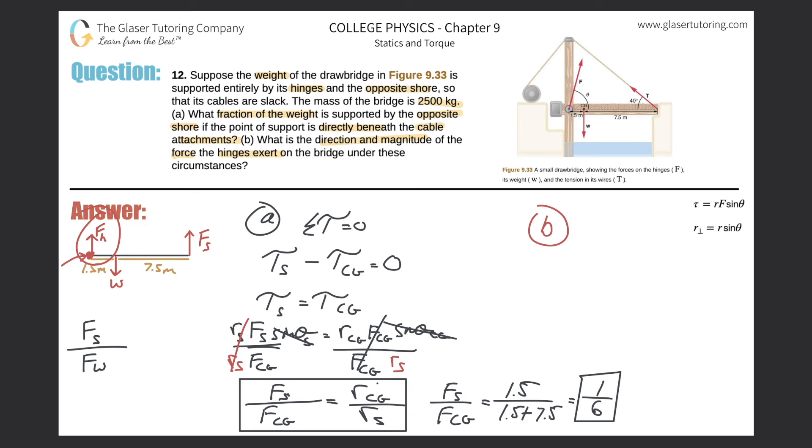well, where's the other 5 sixths being supported by? Guess where? The hinges. So basically I know that then 5 sixths of the total weight is being supported by the hinges or that will equal the force supplied by the hinges.